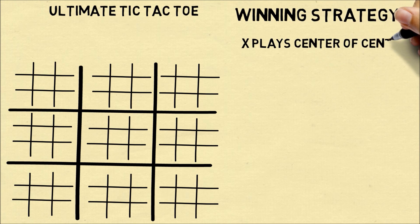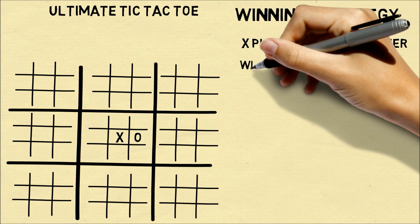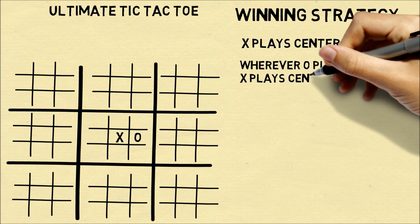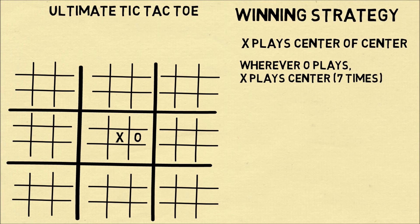So X first plays in the center of the center square. This will force O to play somewhere in one of the center squares. Now wherever O plays, X should respond by taking the center of that square.